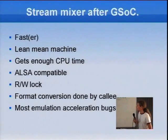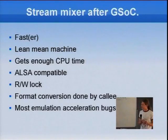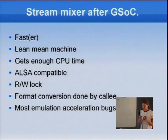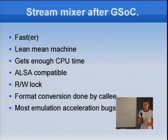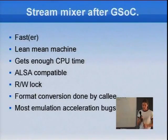So what have I done with the Google Summer of Code and beyond that? First I tried to optimize the mixer and make it do as few context switches as possible, by removing the WinMM timer.